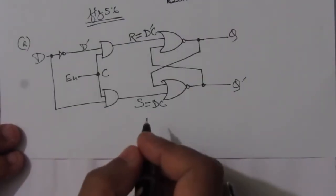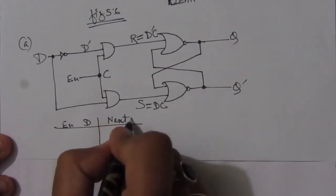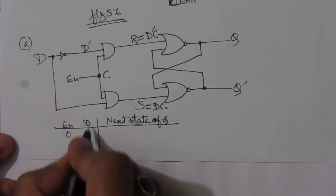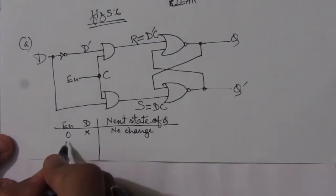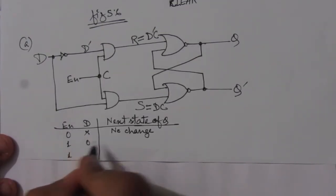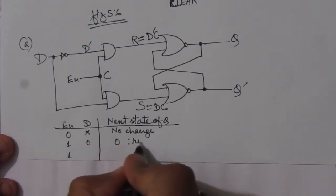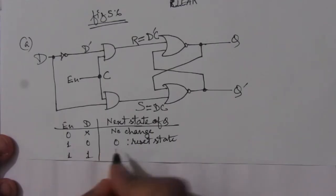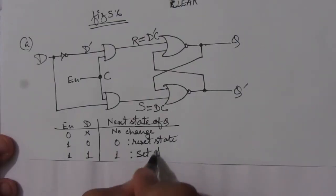Now let us verify with a function table showing D, enable input, and next state of Q. When enable input is 0, irrespective of D, we have no change. When enable is 1 and D is 0, the next state of Q will be 0 — this is the reset state. When enable is 1 and D is 1, the next state of Q will be 1 — this is the set state.